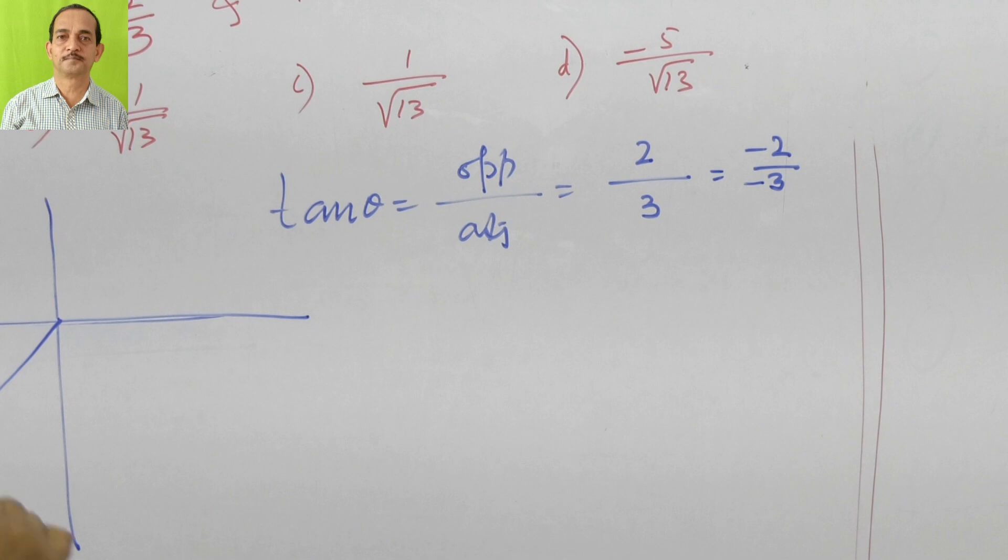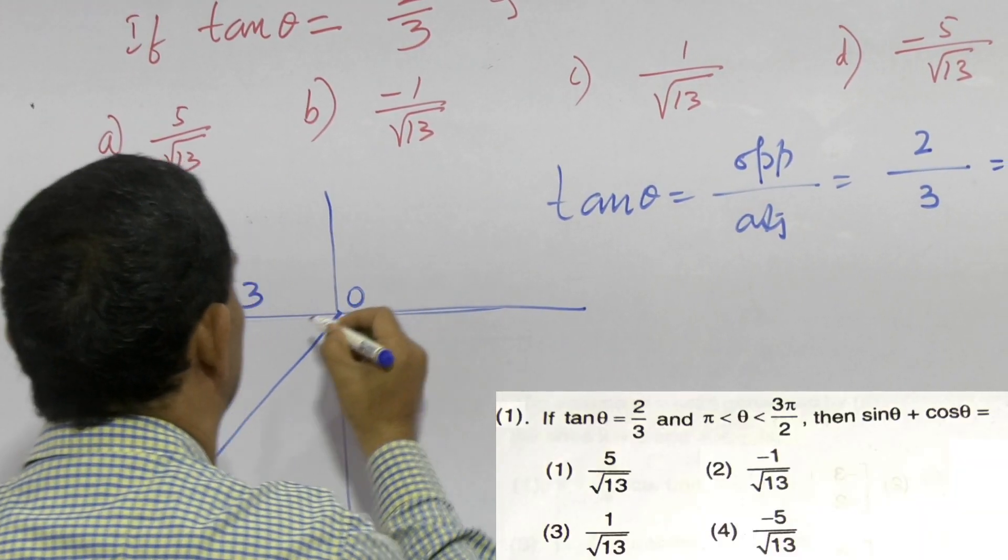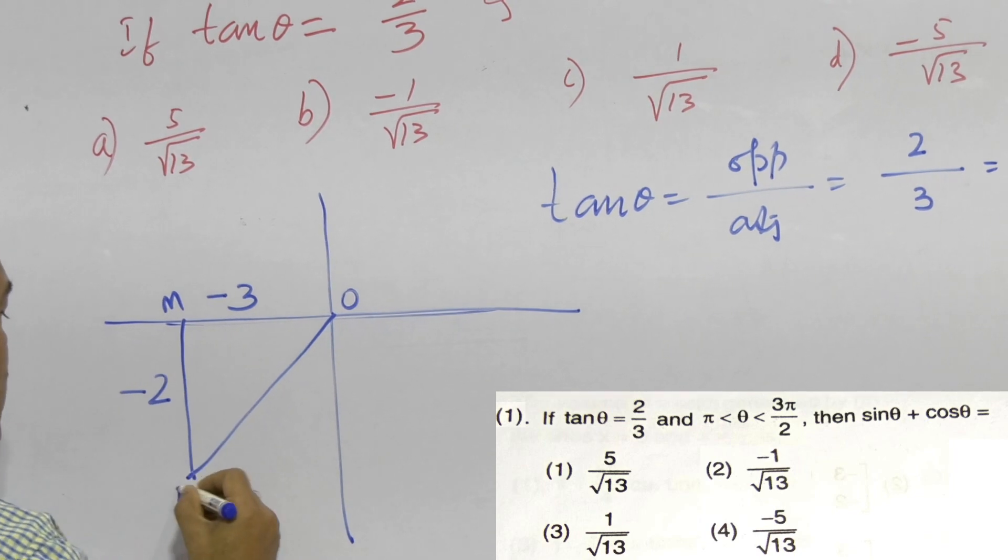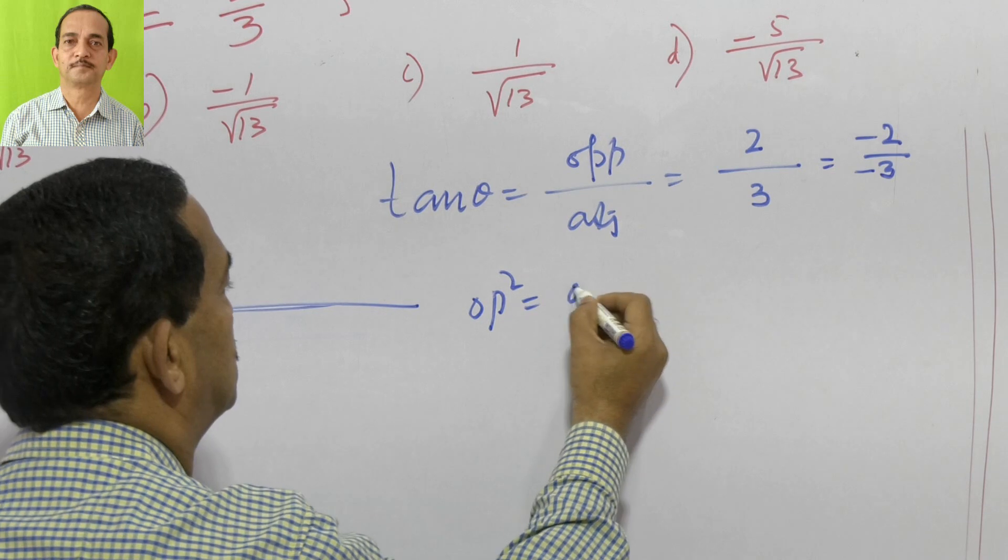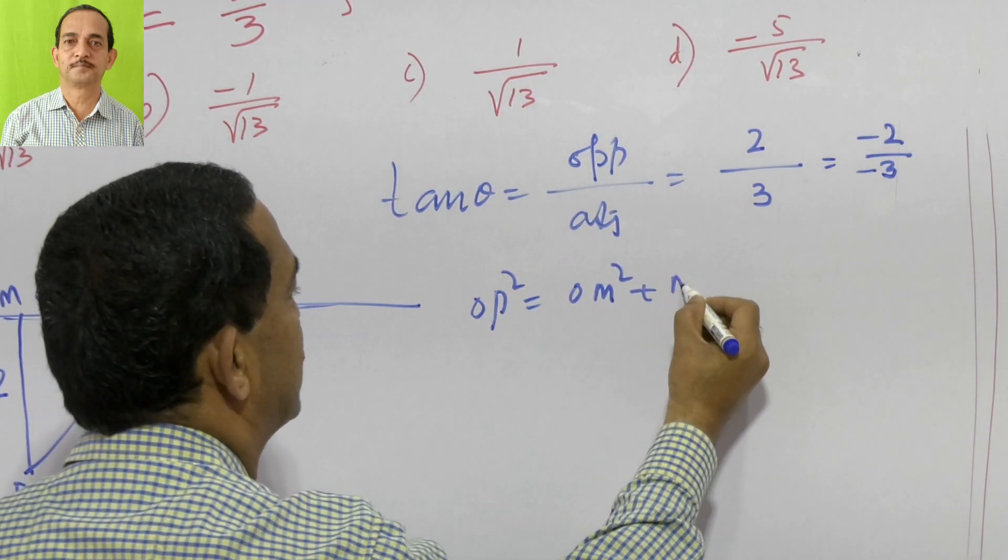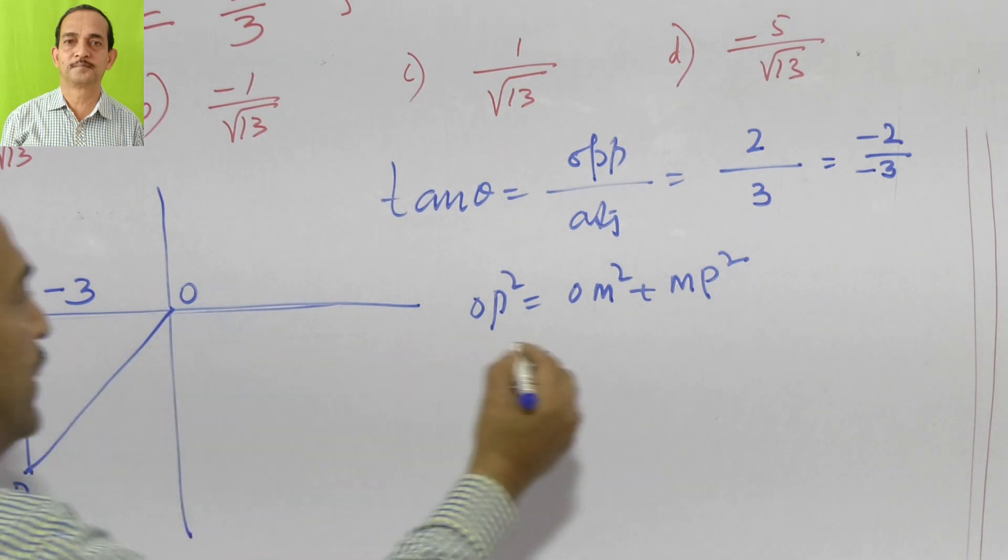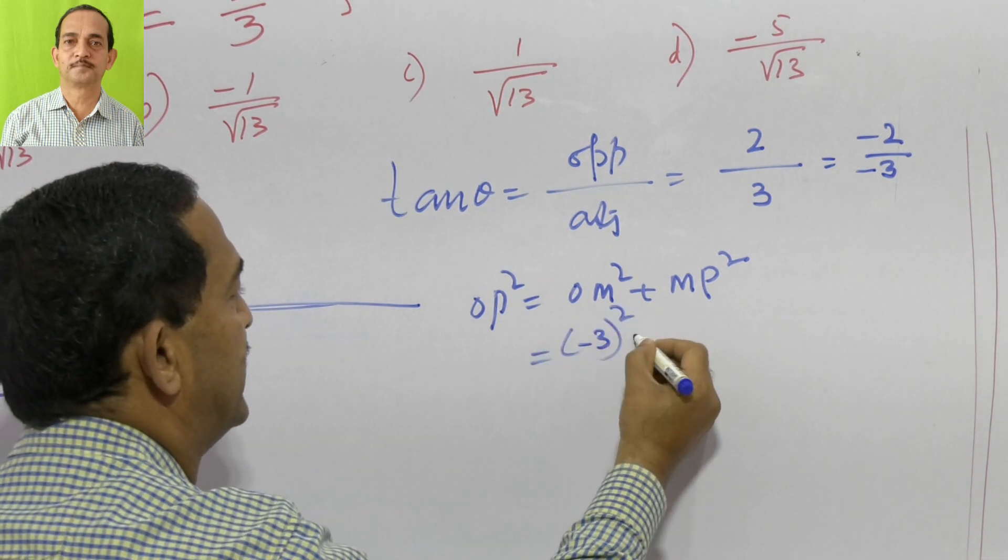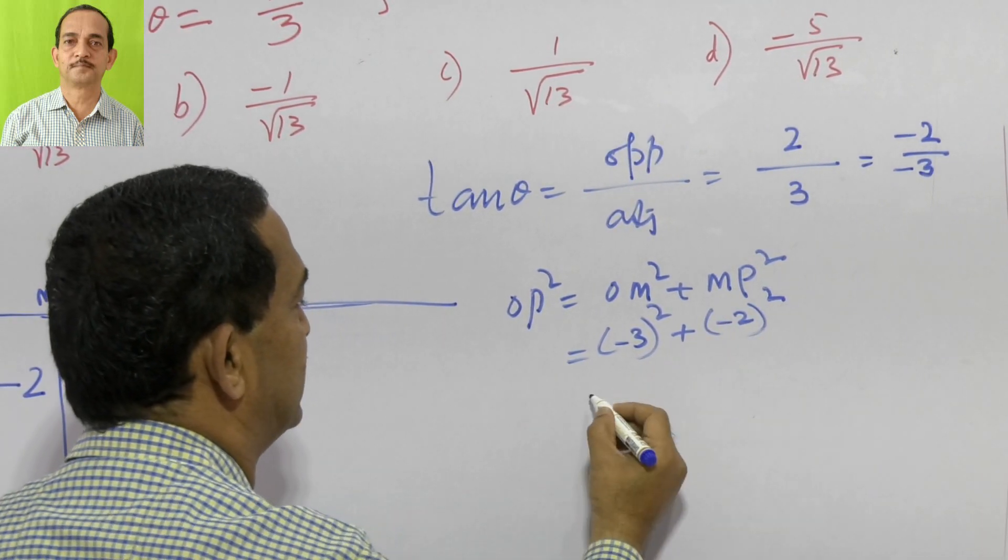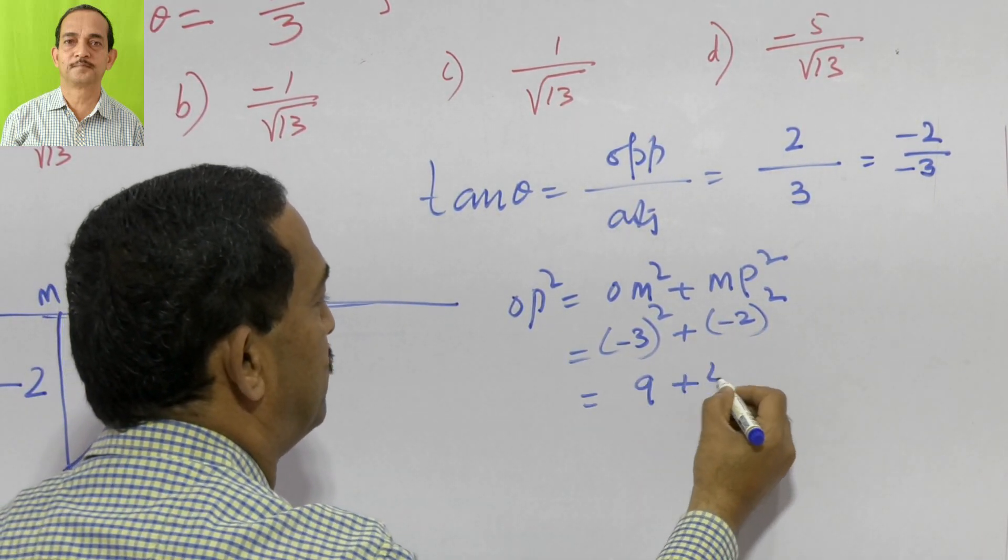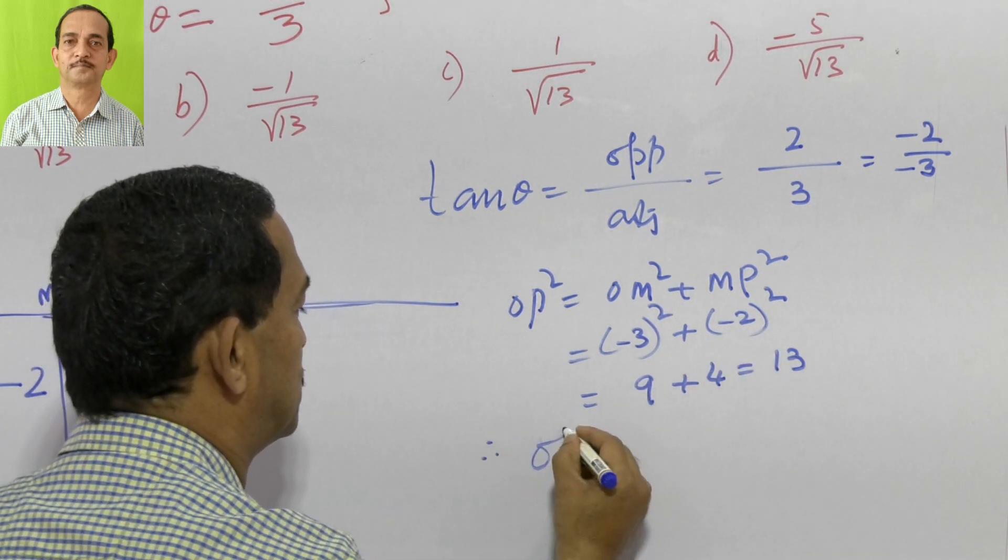Now we have to find the hypotenuse by Pythagoras theorem. If we mark here OMP, we have OP squared equals OM squared plus MP squared. OM is minus 3 whole squared plus MP is minus 2 whole squared. That is 9 plus 4, equal to 13.